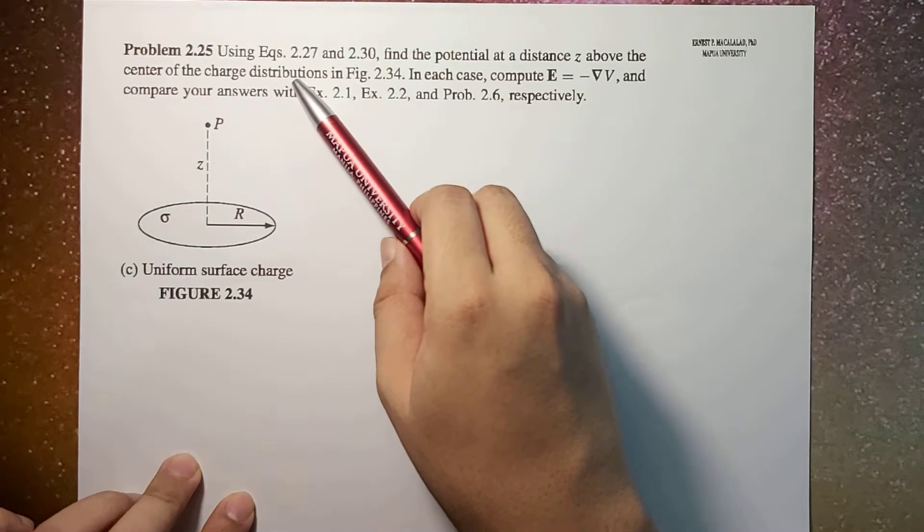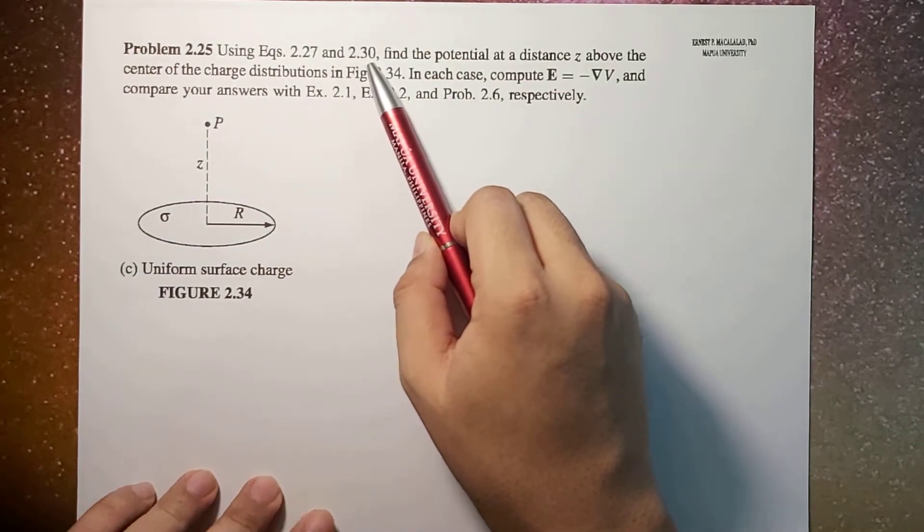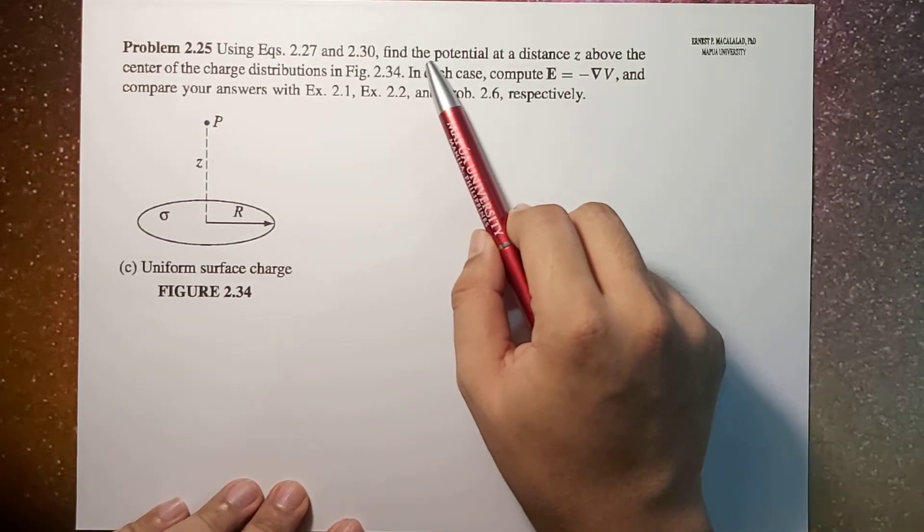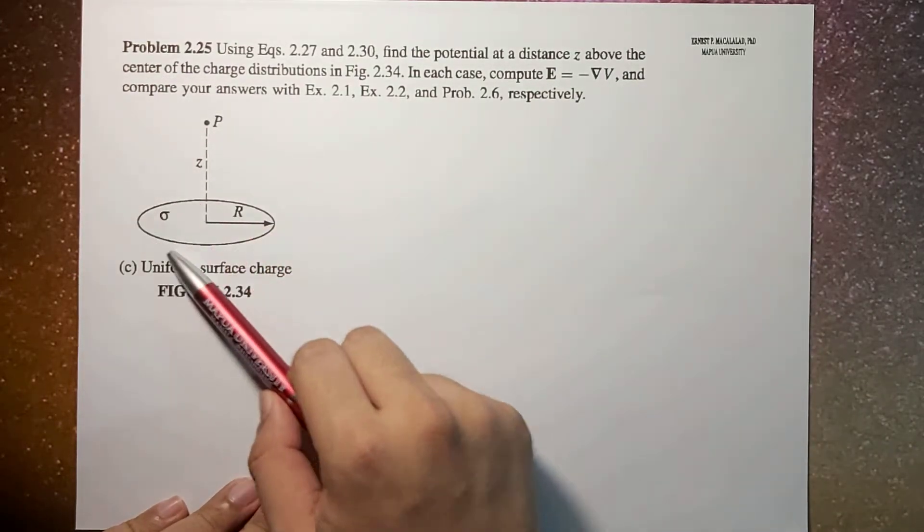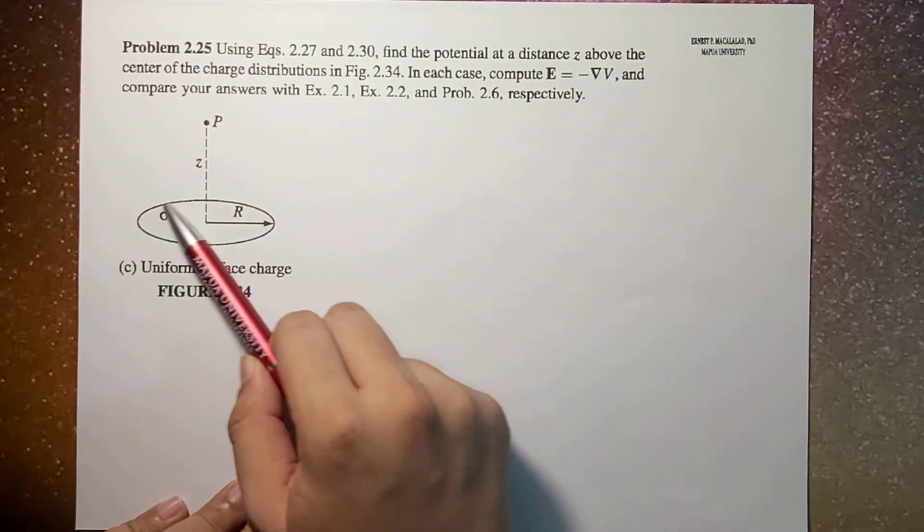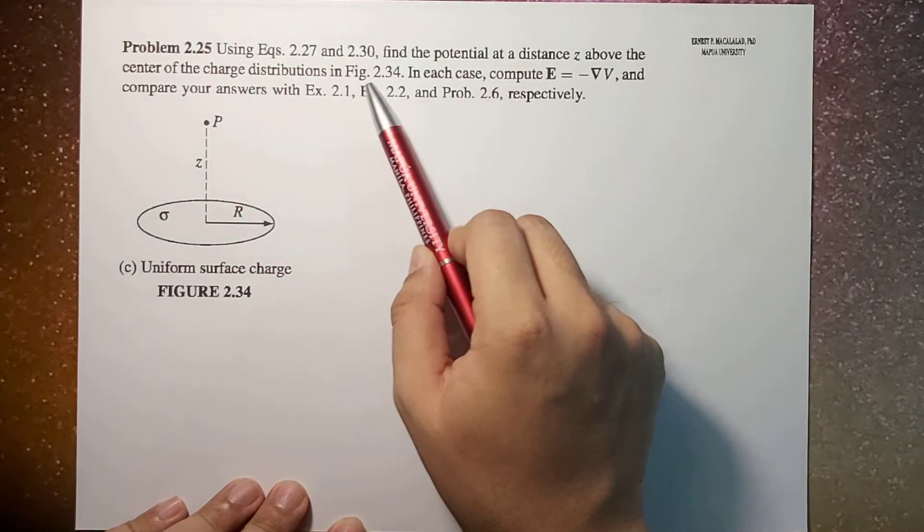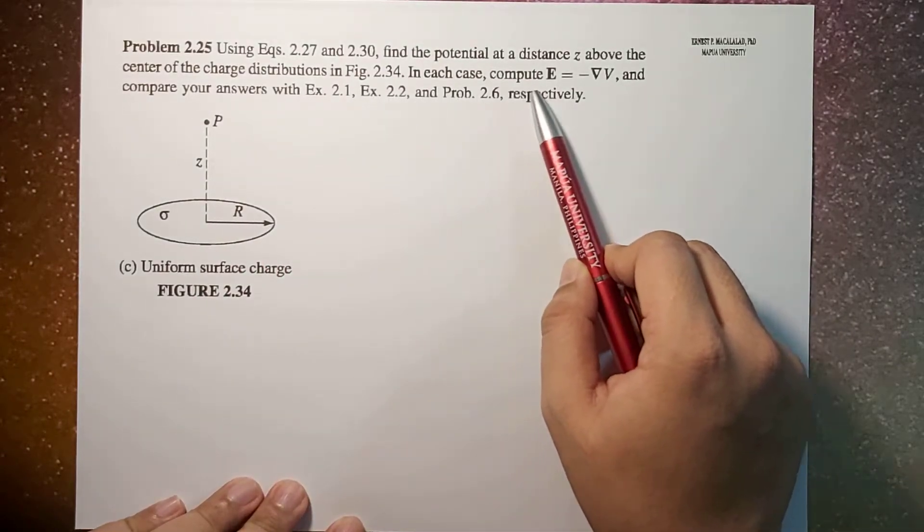Using equations, in this case equation 2.30, we're going to find the potential at a distance z above the center of this charge configuration, which is a circular charge configuration.